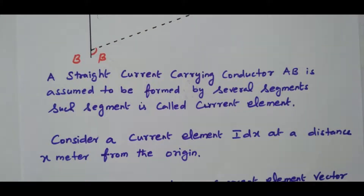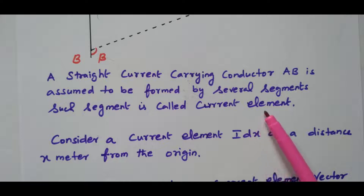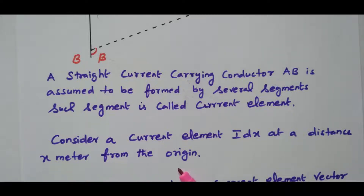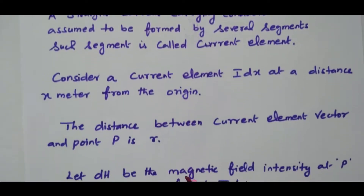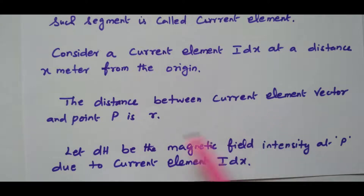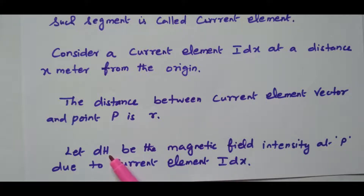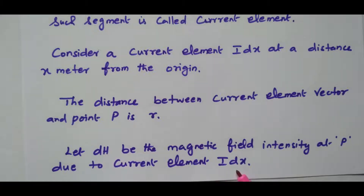A steady current-carrying conductor AB is assumed to be formed by several segments. Such a segment is called a current element. There are n number of segments — that segment is nothing but a current element. We consider one current element idx at a distance x meters from the origin. The distance between this current element and point P is r meters. dH is the magnetic field intensity at point P due to the current element idx. By integration, we will get the total magnetic field intensity.